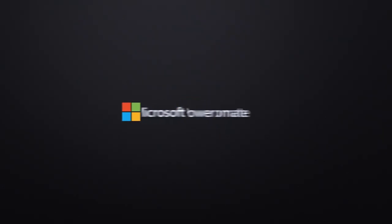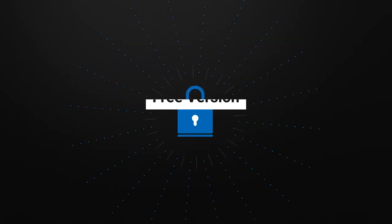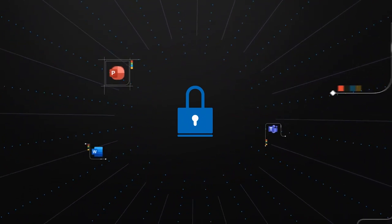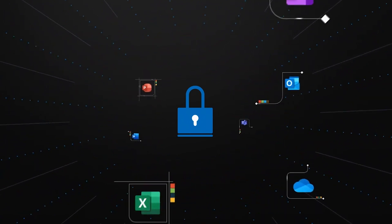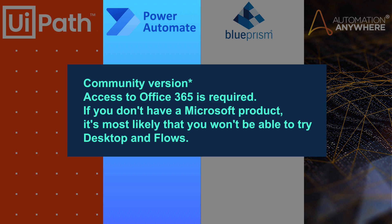Now let's talk about Power Automate, the new giant. It has a free version — yes, it does have a free version that we can access with our Office 365 subscription. However, if we don't have a subscription, we cannot access it, so it is free and not free at the same time. Most companies work with Excel and some Microsoft Suite, so it is probably free to try.